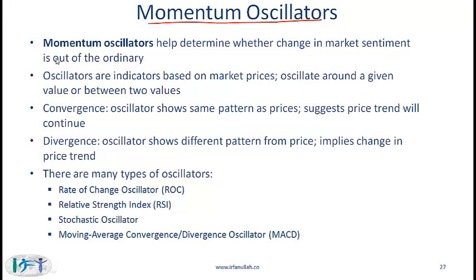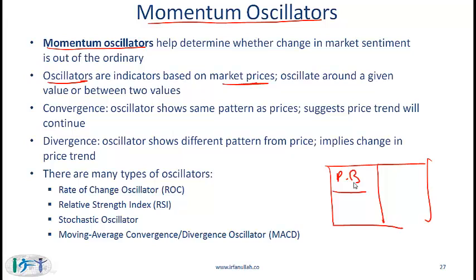I am going to simply read this slide because I have already listed the main points here. Momentum oscillators help determine whether the change in market sentiment is ordinary or out of the ordinary. They are indicators based on market prices and they oscillate around a given value or between two values. Momentum oscillators are also calculated based on price but are a little more sophisticated than the two basic price-based indicators we talked about earlier.